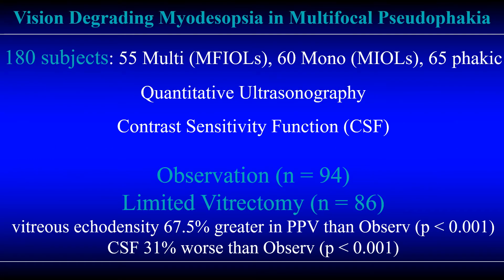There were 180 subjects in this study group: 55 had multifocal intraocular lenses, 60 had monofocal IOLs, and 65 were phacic. Quantitative ultrasonography and measurements of contrast sensitivity function were performed in each case. 94 of these individuals chose observation, while 86 chose to undergo limited vitrectomy. Interestingly, vitreous ecodensity was 67.5 percent greater in the group that chose vitrectomy as compared to those who chose observation.